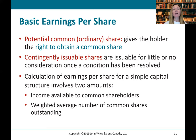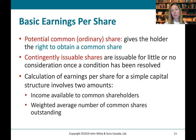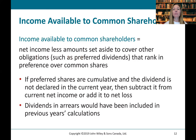A potential common share gives the holder the right to obtain a common share. Contingently issuable shares are issuable for little or no consideration once a certain condition has been resolved — for example, once income reaches a certain threshold. Income available to common shareholders is the numerator in our EPS calculation: net income less amounts set aside to cover other obligations, such as preferred dividends that rank in preference over common shares.